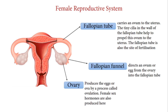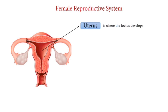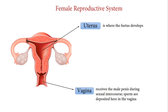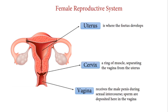The fallopian tube is also the site of fertilization. The uterus, also known as the womb, is where the fetus develops. The vagina receives the male penis during sexual intercourse and sperm are deposited here. The cervix is a ring of muscle separating the vagina from the uterus.